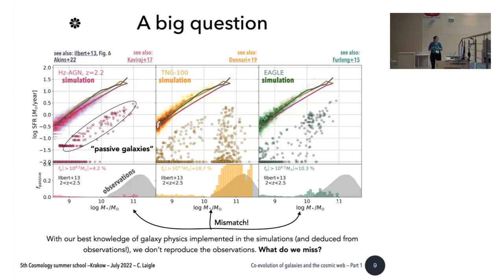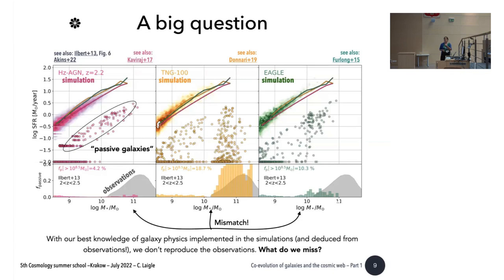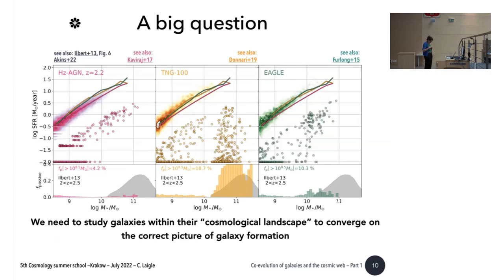There is something that we miss if we want to understand galaxy formation, and we don't know really what. Is it just that the feedback — energy injected by AGN or supernovae — is not well reproduced? Maybe to understand what we miss, we should replace galaxies in the cosmological landscape, which is the cosmic web you heard about from Rin in the previous days. This is what we are going to do in this lecture.